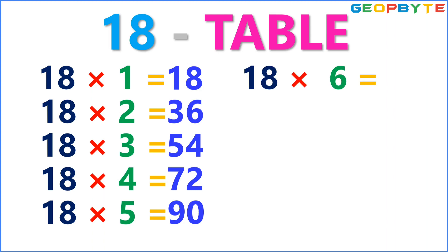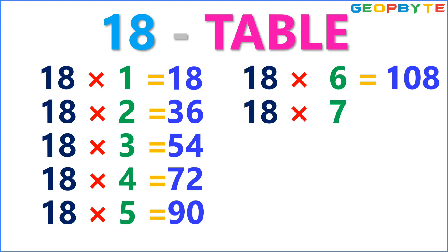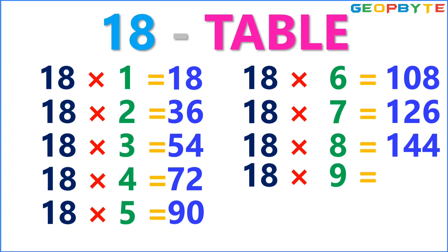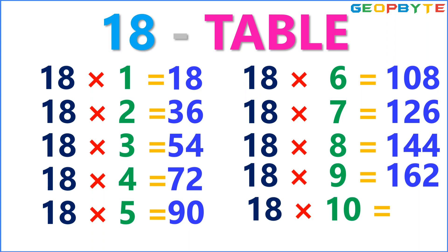18 fives are 90. 18 sixes are 108. 18 sevens are 126. 18 eights are 144. 18 nines are 162. 18 tens are 180.